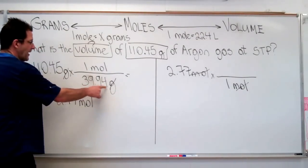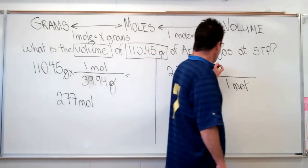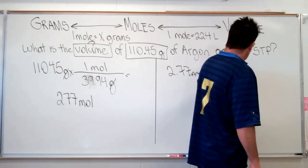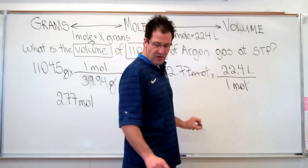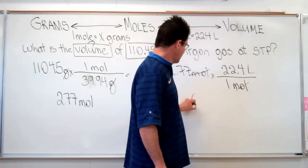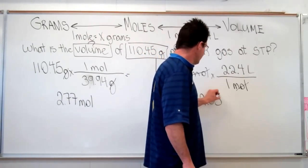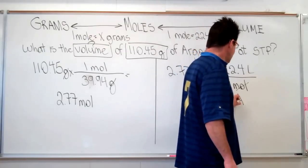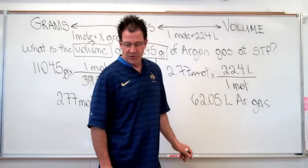Gram, gram on the bottom. Mole on top. So we have our mole left over. Mole, mole on the bottom. And we put our volume on the top, 22.4 liters. We're left with liters. And in this case, we know that our answer is going to be 62.05 liters of argon gas at standard temperature and pressure.